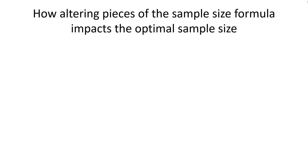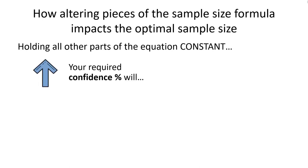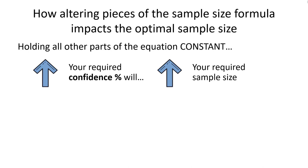Now that we have familiarity with each component of the sample size formula and how we derive or estimate those values, let's understand how tweaking each individual component — while holding the others constant — impacts overall optimal sample size calculations. This is true for both equations we deal with. First, as you increase the confidence percentage required, increasing confidence is going to increase the required sample size. To be more sure, you're going to have to pay for it with more data collection.